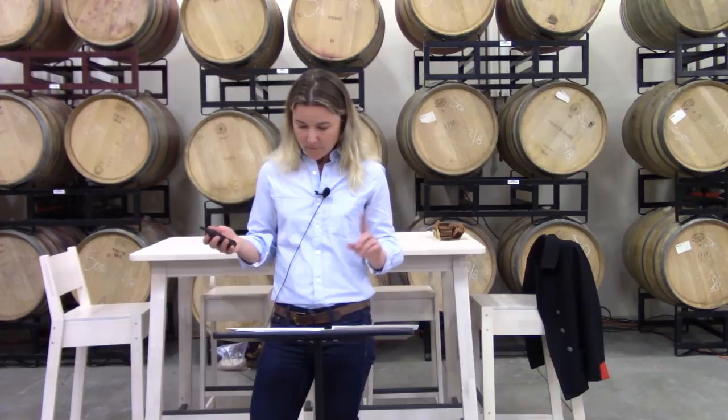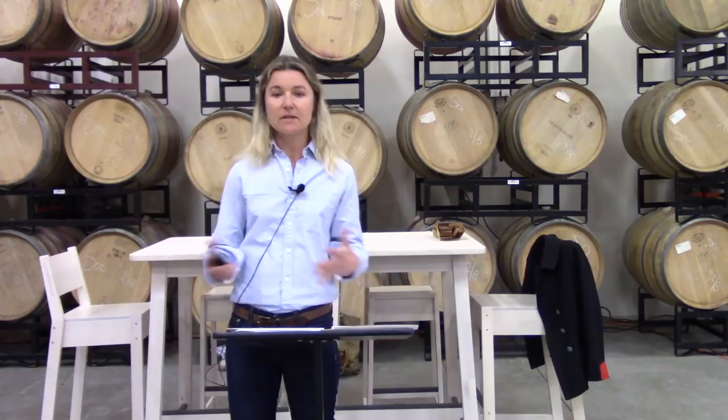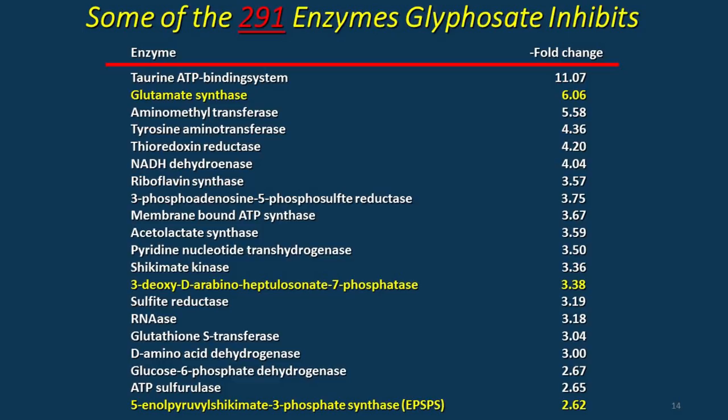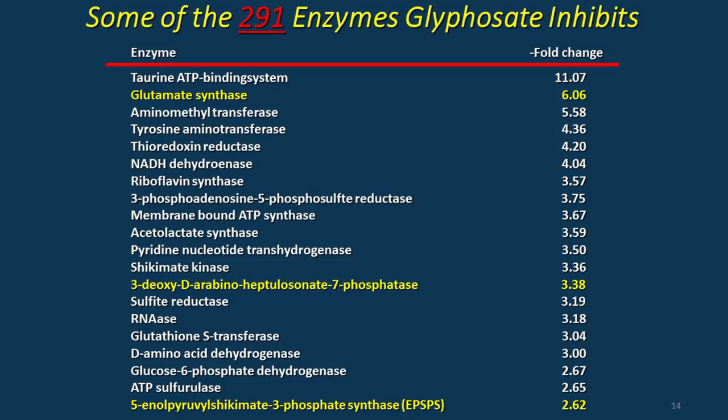Animals and humans do not have that pathway. Hence, there was a very strong perception of safety early on in glyphosate's history — and you can see how things have transpired since then. Monsanto won its herbicidal and antibiotic patents and label approval on the identification that it shuts down the EPSPS enzyme and the shikimate pathway. But glyphosate, we now know, actually shuts down or down-regulates 291 known enzymes — and the EPSPS enzyme is far less influenced by glyphosate than some of the others.